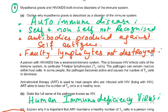Myasthenia gravis actually destroys your own body cells. The reason is that lymphocytes which make antibodies against your own antigens should have been destroyed when they mature in the thymus, but they are not being destroyed. That is why this results in the disease called autoimmune disease.